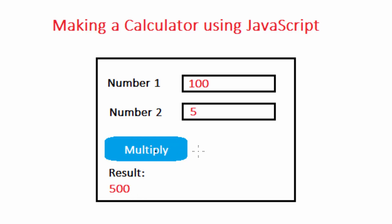The result is shown when the button is clicked. The button is blue in color as you can see, and the result is shown below the label written 'result'. This is very simple and anybody can make it so long as you know how to do basic JavaScript coding commands.